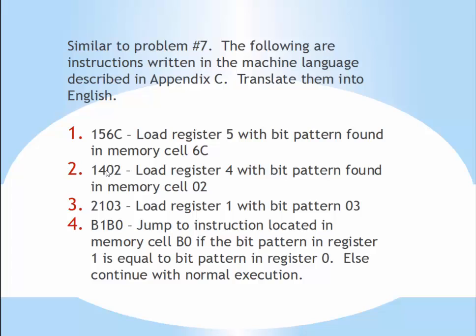Register 4 will have whatever memory cell 00 has — in our previous example it was 35 or 34. In this case if the opcode is 2, register 1 is simply going to have the bit pattern 03. The instruction B1B0: B stands for jump. Jump to the instruction located in memory cell B0 if the bit pattern in register 1 is equal to the bit pattern in register 0. Notice there is no second register specified — it is always compared to register 0. So jump to instruction in memory cell B0 if register 1 equals register 0, else continue with normal execution. You can decipher any of these based on your Appendix C.